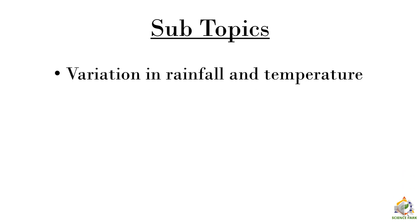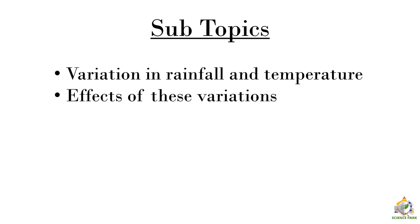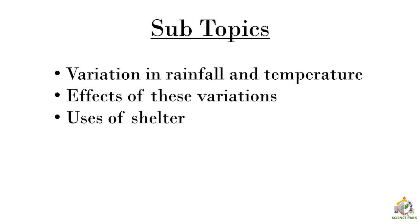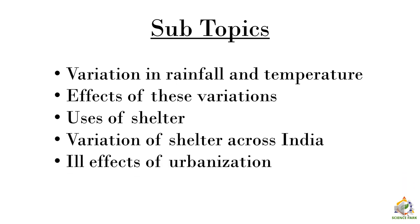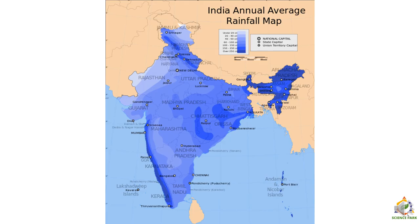First, we are going to see the variation in climate — that is, variation in rainfall and temperature in India. Then we'll look at the effects of these variations. Then we are going to see about shelter: what are the uses of shelter and why do we need them. Then the variation of shelter across India, the ill effects of urbanization, and the concept of eco-friendly houses.